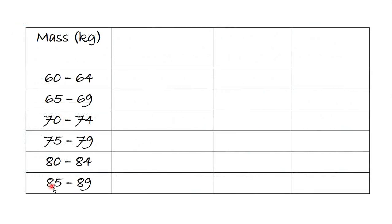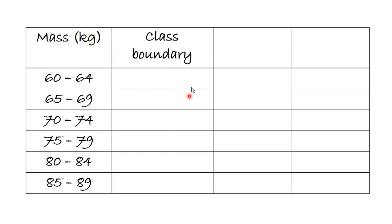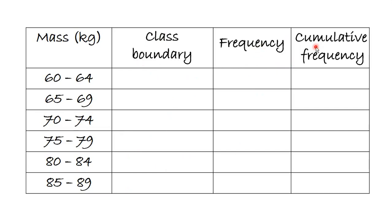This is the data that we have: the mass in kilograms and the frequency. Since we want to draw the cumulative frequency curve, that is the ogive, we need the class boundary. I am going to organize the table with class boundary, frequency, and cumulative frequency columns.